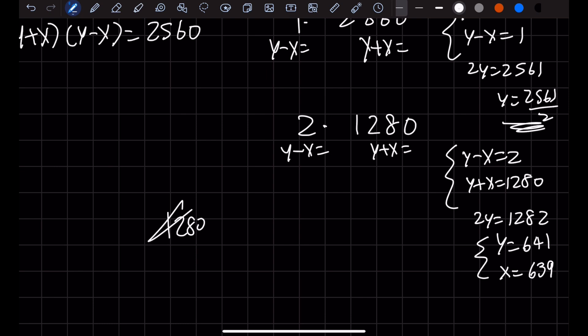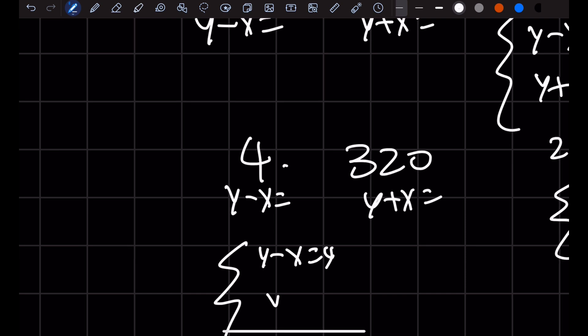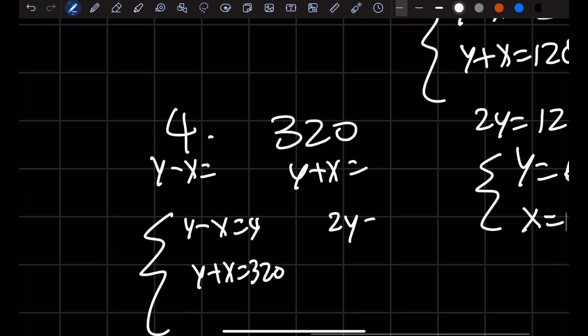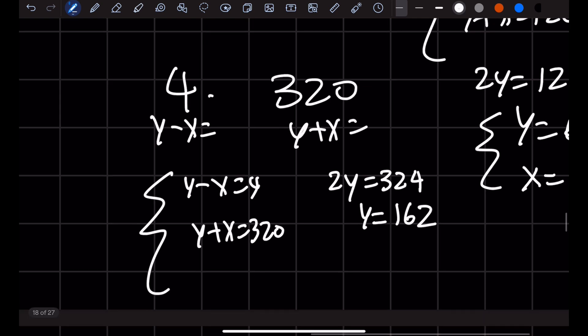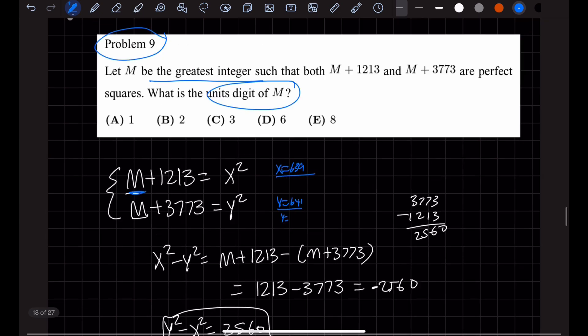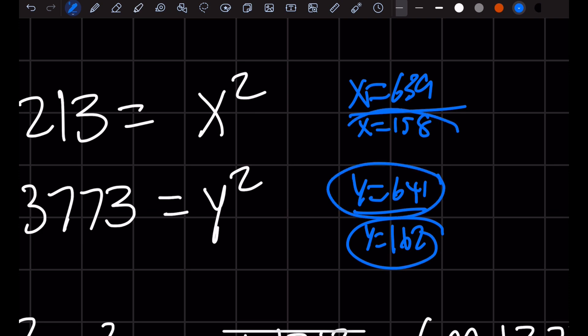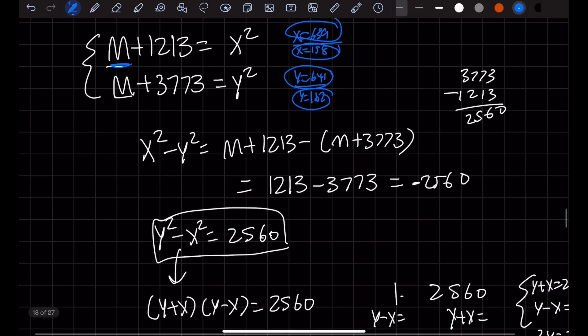Is 1,280 divisible by 3? It is not, because the digits don't sum to a number divisible by 3. Let's try 4 instead. 4 would be 640. So y minus x equals 4, and y plus x equals 640. This gives 2y equals 644, so y is 162. And x would be 162 minus 4, which is 158. We see immediately this is smaller than 641, and 158 is smaller than 639. So this probably doesn't work.